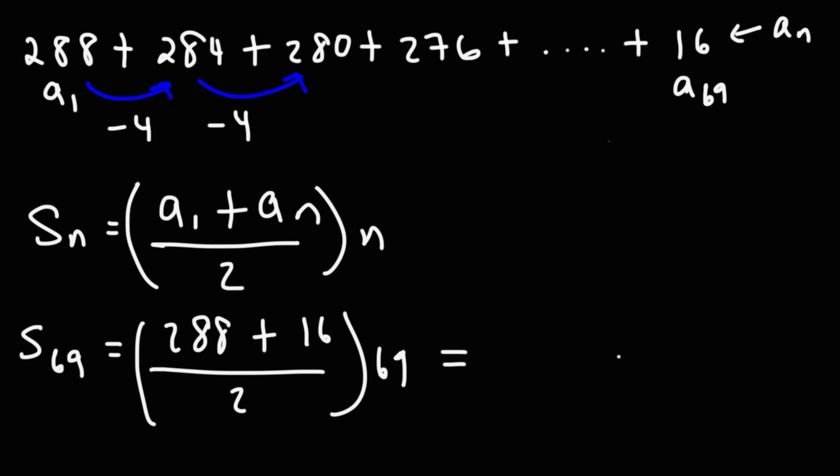304 divided by 2 tells us that the average of all the numbers in this sequence is going to be 152, which is the average of the first and last term. So 152 times 69 is 10,488.